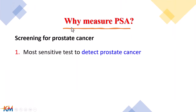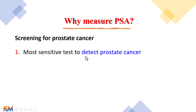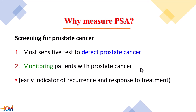Indications — why we measure PSA: PSA is used to diagnose prostate gland disease. The most important reason to measure PSA is to screen for prostate cancer, and PSA is considered the most sensitive test to detect prostate cancer, so it is used as a tumor marker for the prostate. Also, it is used for monitoring patients with prostate cancer as an indicator of recurrence and response to treatment.